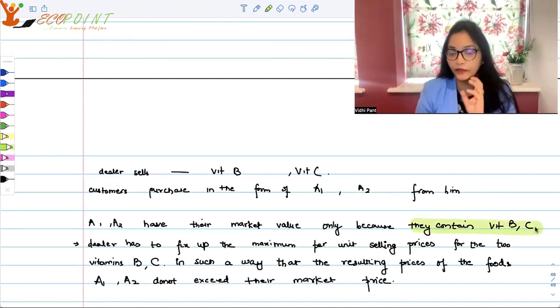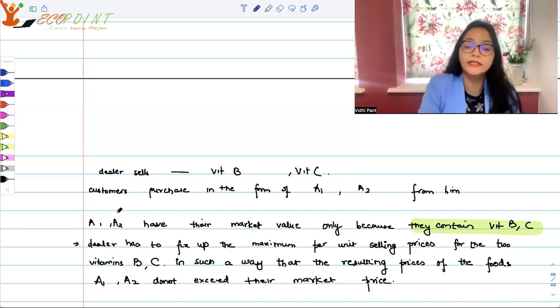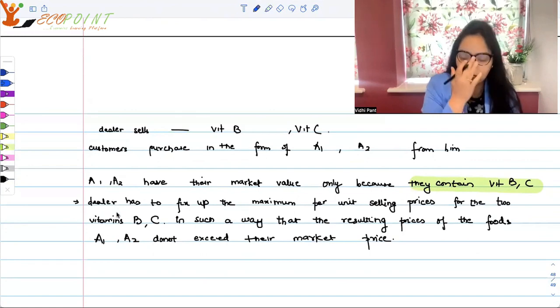Now A1, A2, it's an assumption that they have their market value only because they contain vitamin B and C. That's why you consume it. Now the dealer will have to fix the maximum per unit selling price of the two vitamins. You are the dealer, you will have to fix the price of vitamin B and C that you are selling in such a way that the resulting prices of the foods A1, A2 should not exceed their market price, the existing market price.